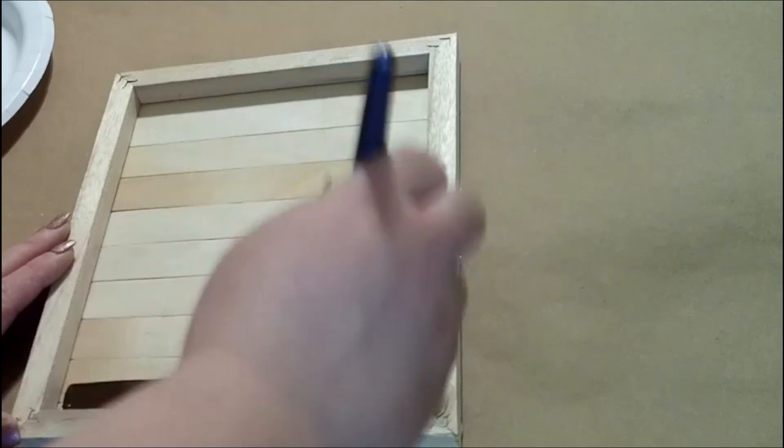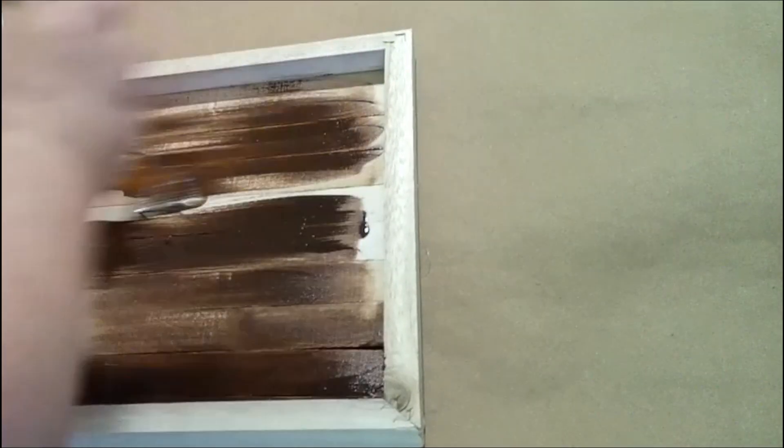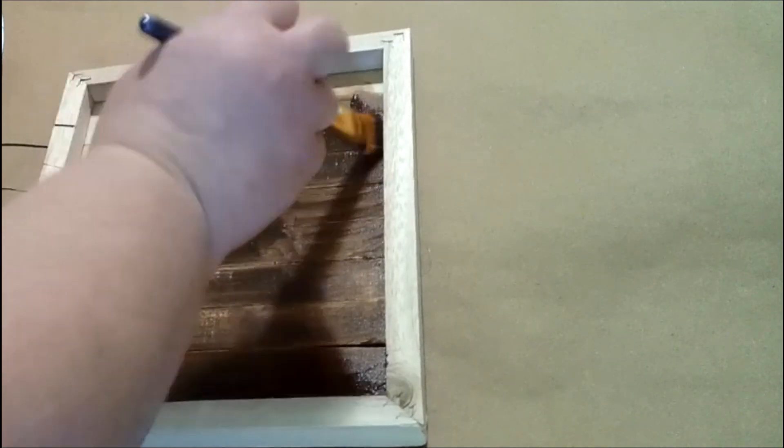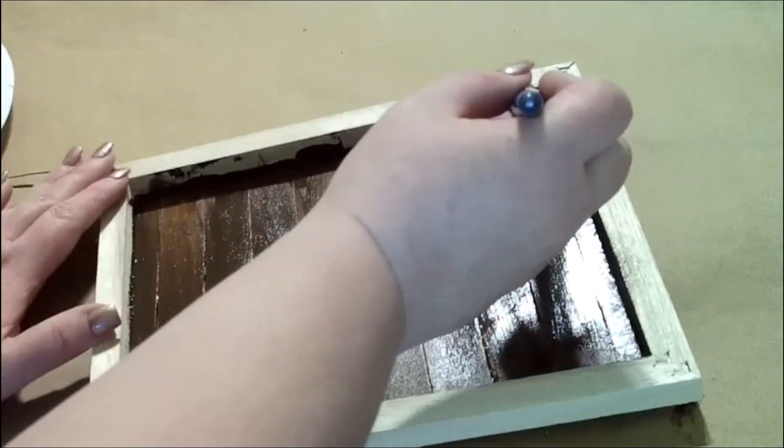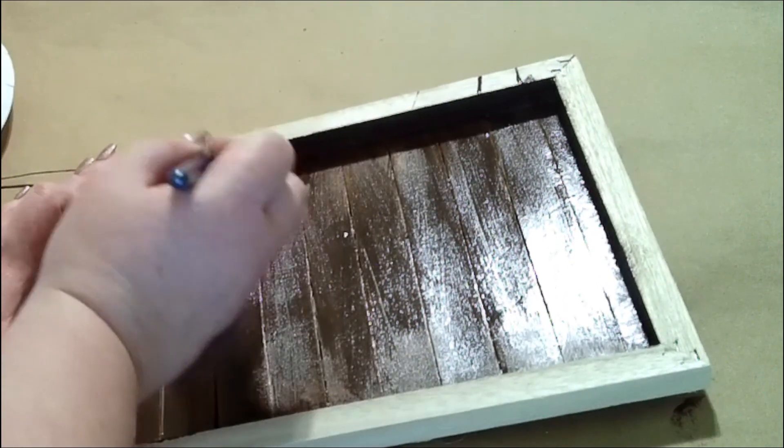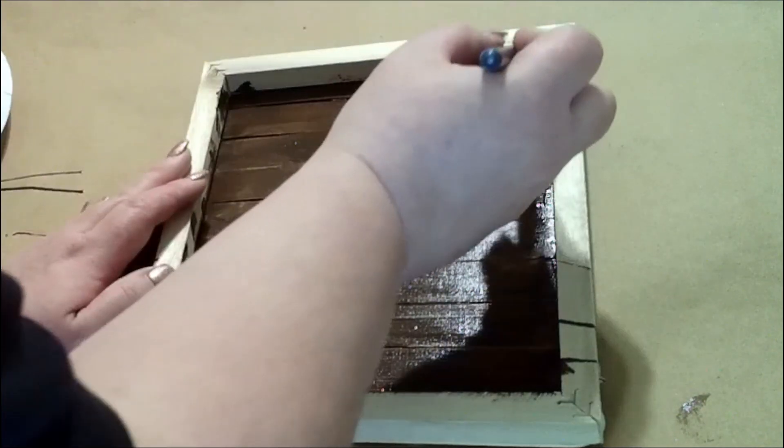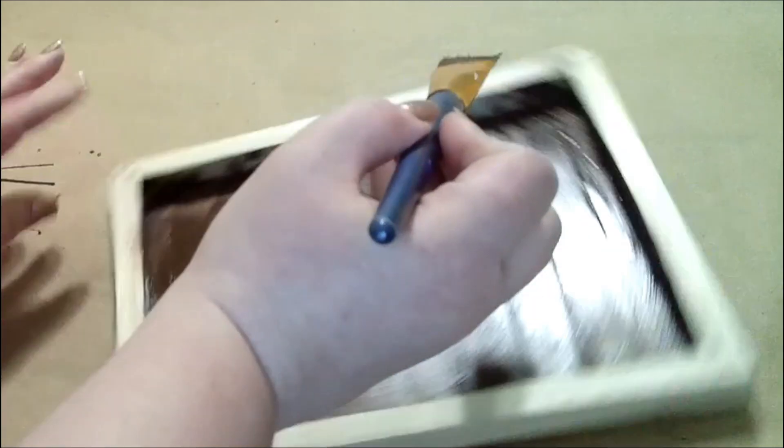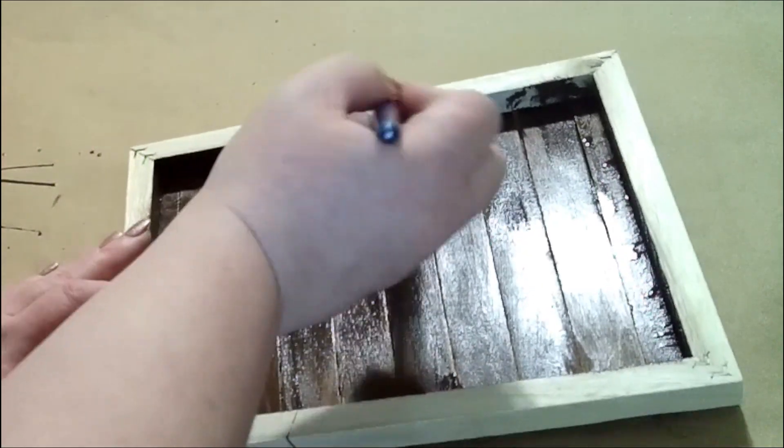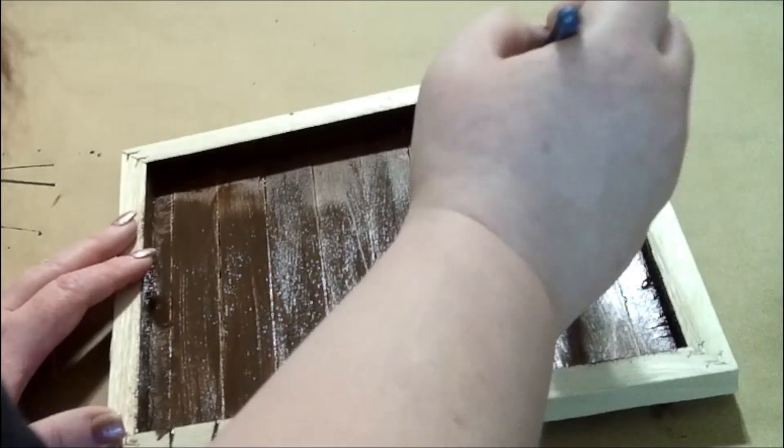Now I'm going to hot glue our jumbo sticks onto the back side of our frame. Then I'm going to take my Waverly Antique Wax Paint and give our project a nice good coat.